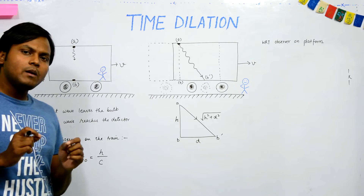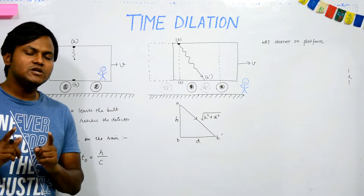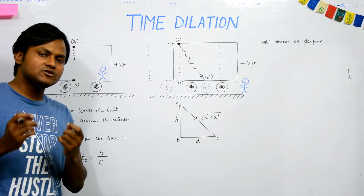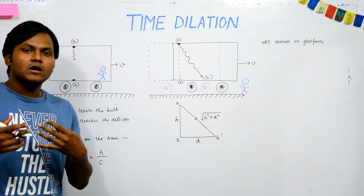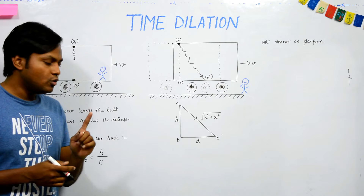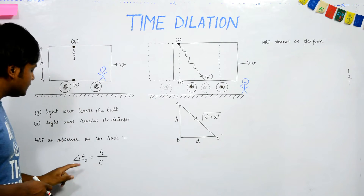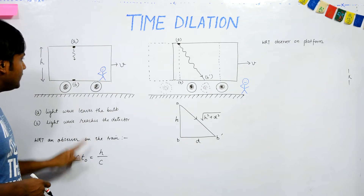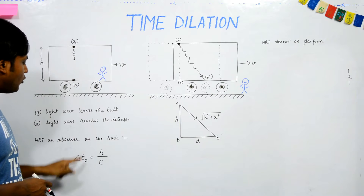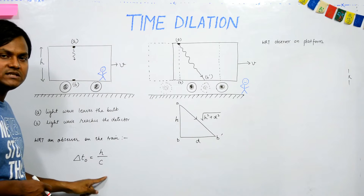Recall the second postulate of special relativity: the speed of light is always constant regardless of the inertial frame of reference. So we always use the speed of light as C. Therefore, the time period for the light ray to go from point A to point B is H divided by C.